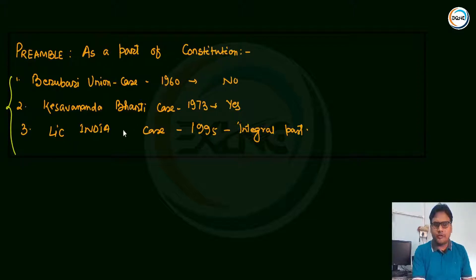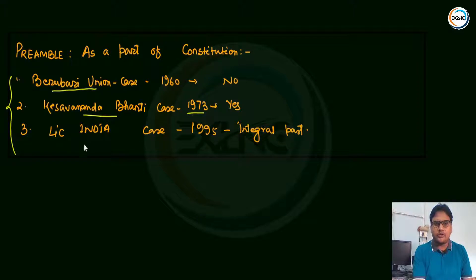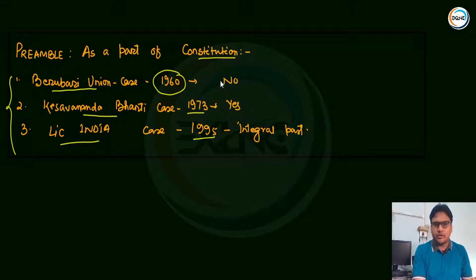The judiciary has pronounced different judgments in different cases. The important cases are the Berubari Union case, the Kesavananda Bharati case of 1973, and the LIC India case of 1995. In the Berubari Union case of 1960, the court pronounced that the Preamble is very significant, although it is not a part of the Constitution.